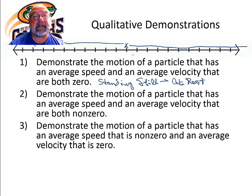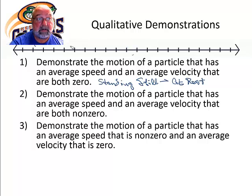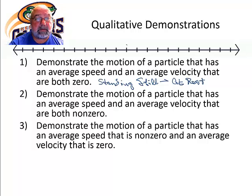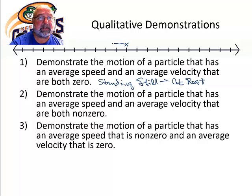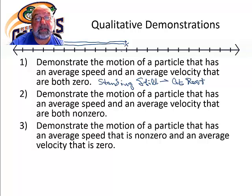Demonstrate the motion of a particle that has an average speed that is non-zero, and an average velocity that is zero. So I'm going to start over here with my drawing. We have a particle right here, and it has an average speed that's non-zero and an average velocity that is zero. Speed is distance — as long as we have a non-zero distance, it would be a non-zero speed. Our average velocity is zero because our displacement, our change in position, is zero. So we return to our starting place.